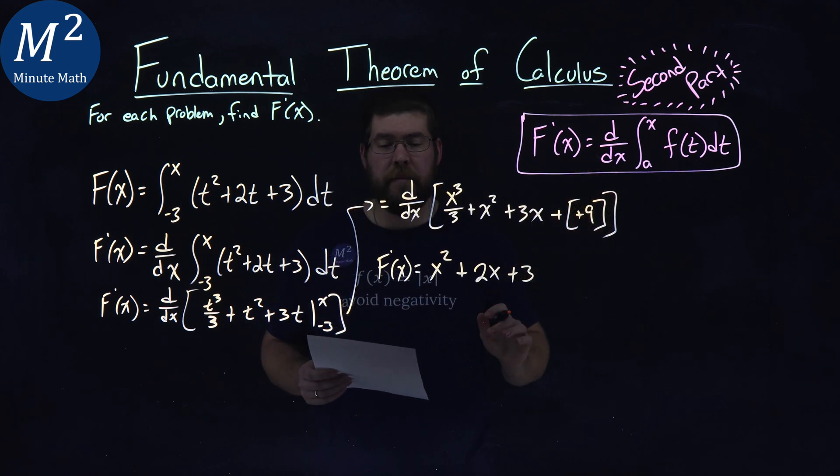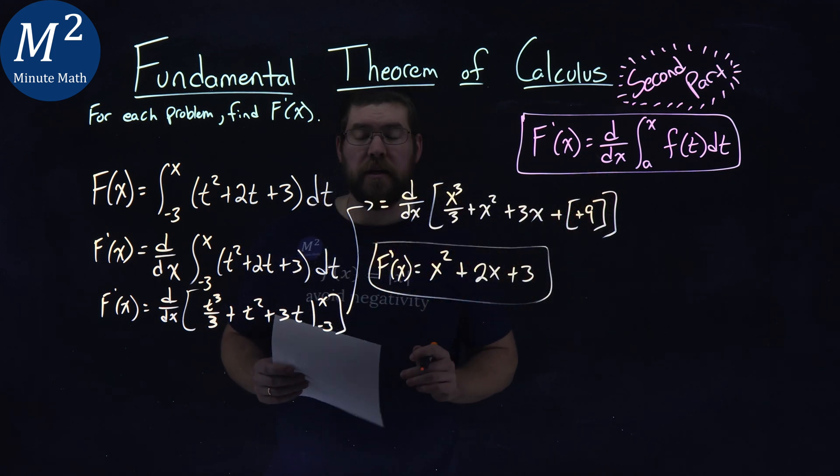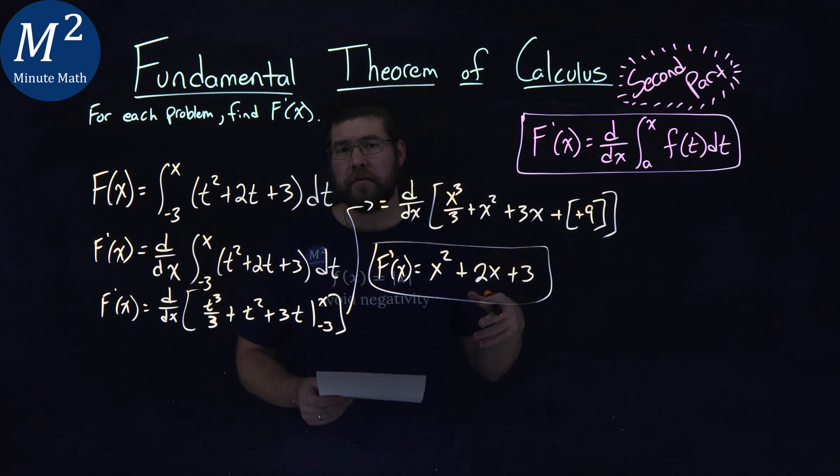And that's why that part really didn't matter. So we actually have our answer. f prime of x is equal to x squared plus 2x plus 3.